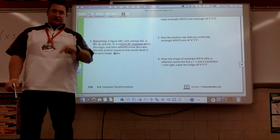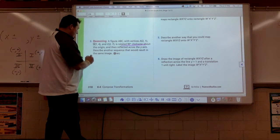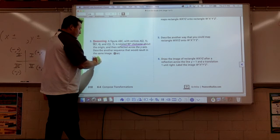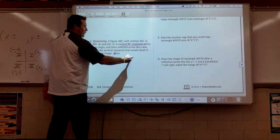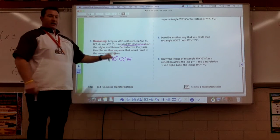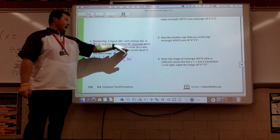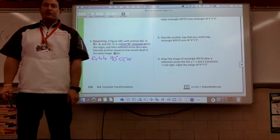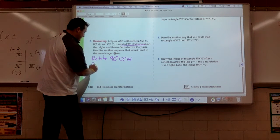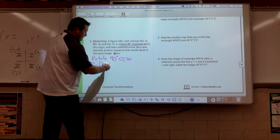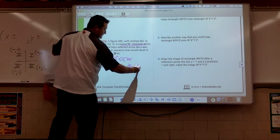Do the opposite of whatever they're doing and you'll end up in the same spot. So they rotated 90 degrees clockwise. We want to rotate in the opposite direction, which is counterclockwise. So we will rotate 90 degrees counterclockwise. If they're going to reflect across the y, what do you think I want you to reflect across? That's right, I want you to reflect across the x-axis.